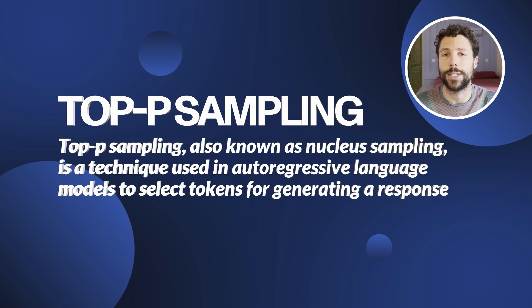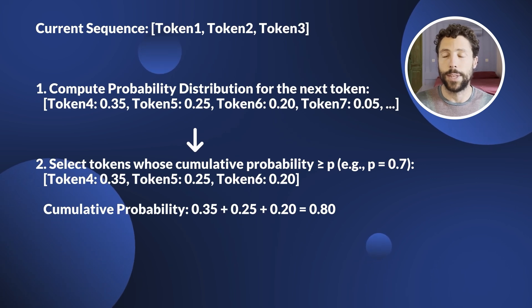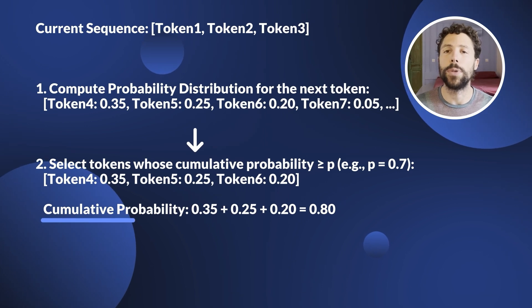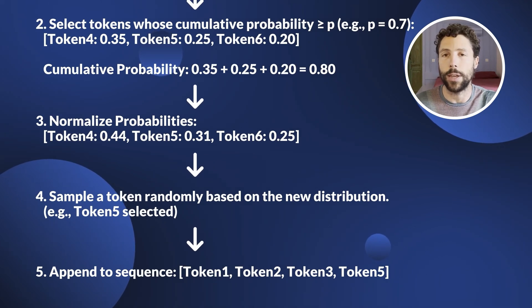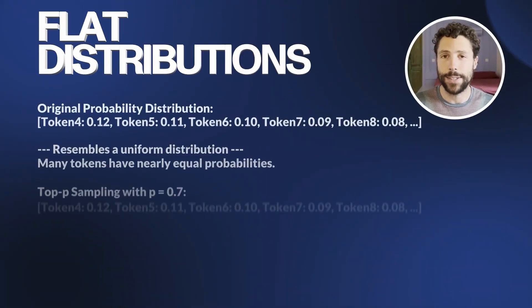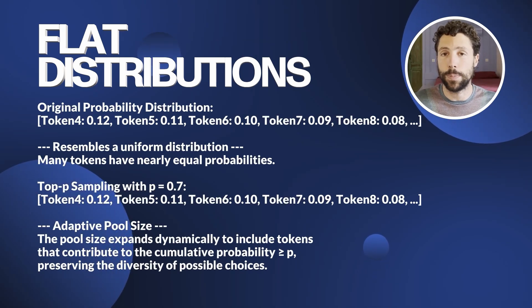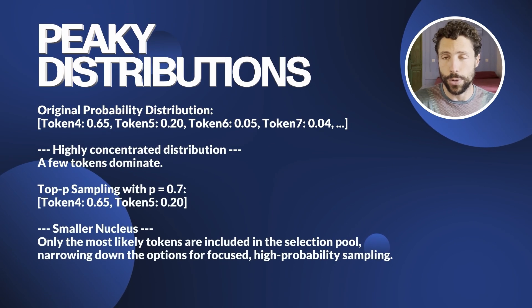TOP-P sampling, or Nucleus sampling, tries to solve these issues with a more dynamic approach. Fix a probability threshold p, for example p = 0.7. The algorithm selects the minimum number of tokens ordered by highest probability whose cumulative probability meets or exceeds this threshold, normalizes their probabilities to sum to 1, then samples a token from this new truncated distribution. While TOP-K always considers a fixed number of tokens, TOP-P adapts based on the probability distribution at each step — for flat distributions it samples from a larger pool, and for peaky distributions it focuses on fewer, most likely tokens.